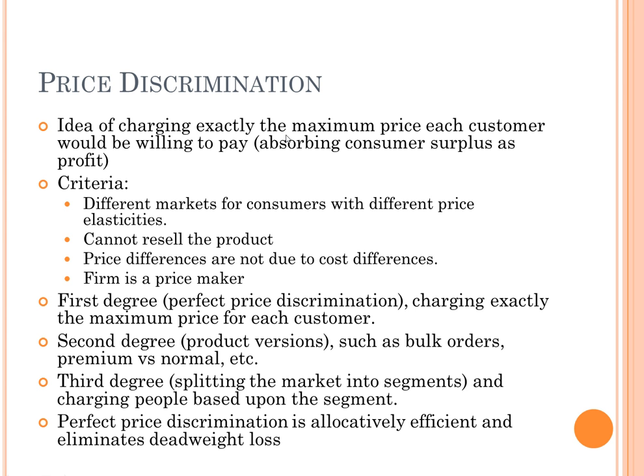In order to price discriminate, the firm has to be able to distinguish different kinds of buyers. They also need to be able to enforce no resale of the good — otherwise, people who buy the good at a low price can just resell it at a higher price, which makes the monopoly lose money. Also, the price differences can't be a result of cost differences, and the firm has to be able to make its own prices.